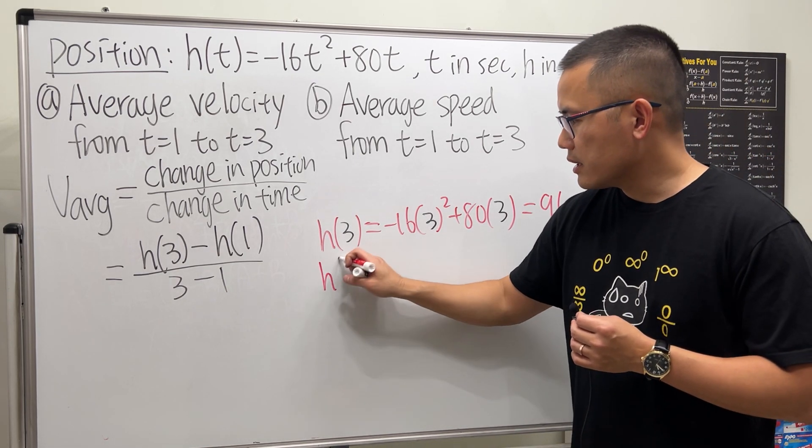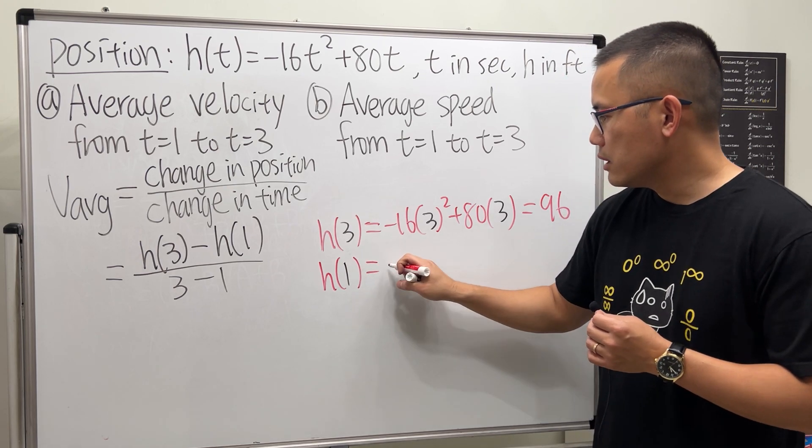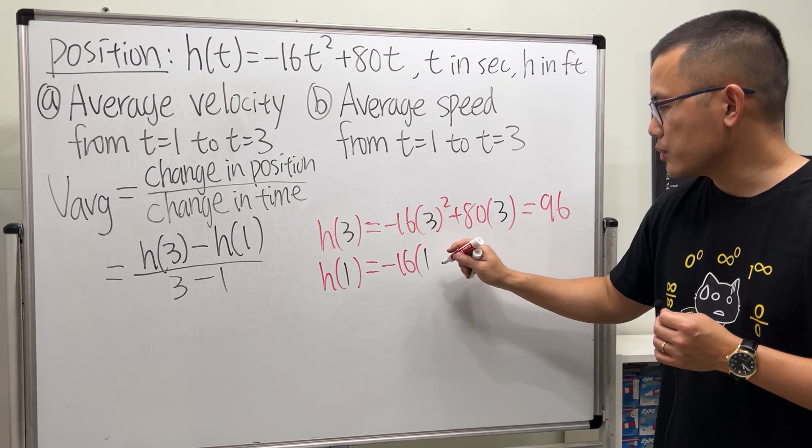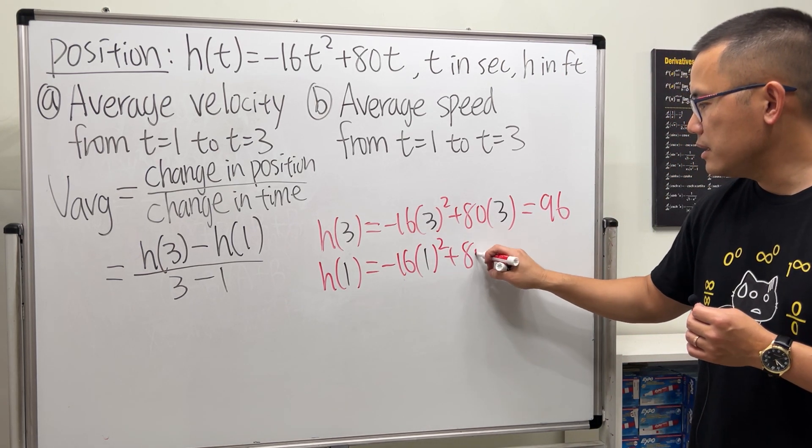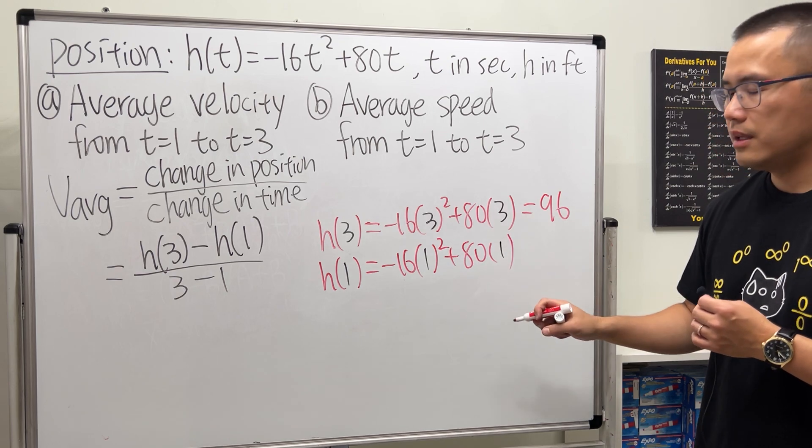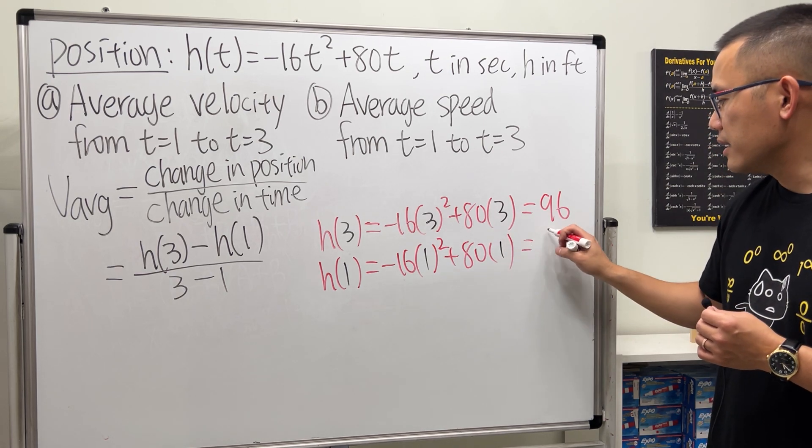And then if you plug in 1 into t, that's negative 16 times 1 squared plus 80 times 1. If you work this out you will get 64.